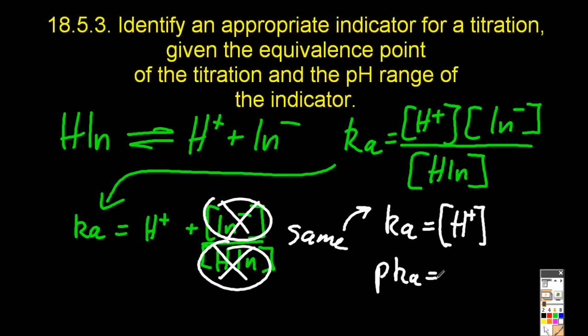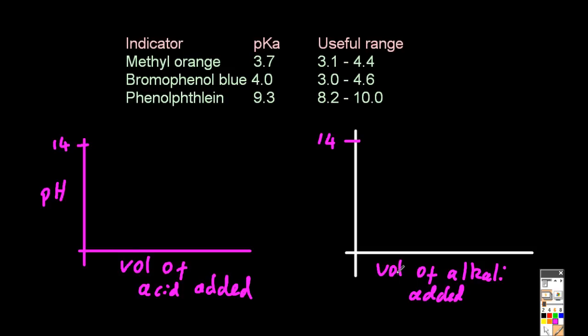So KA will equal H+, and PKA will equal pH. The PKA of your indicator will equal the pH, or should equal the pH of your titration at equivalence.